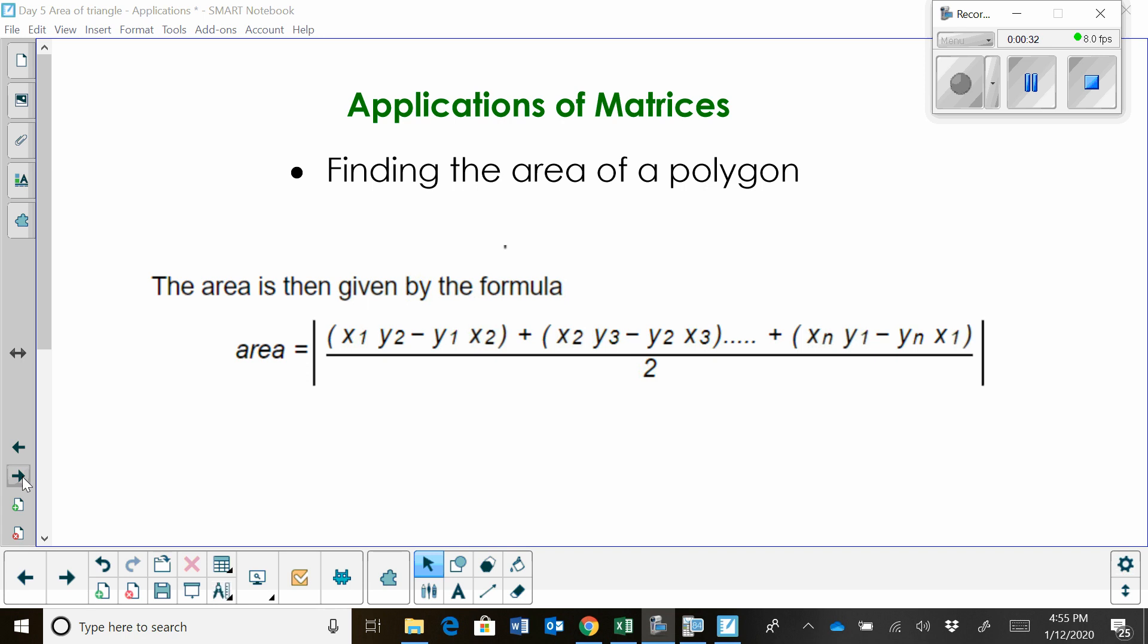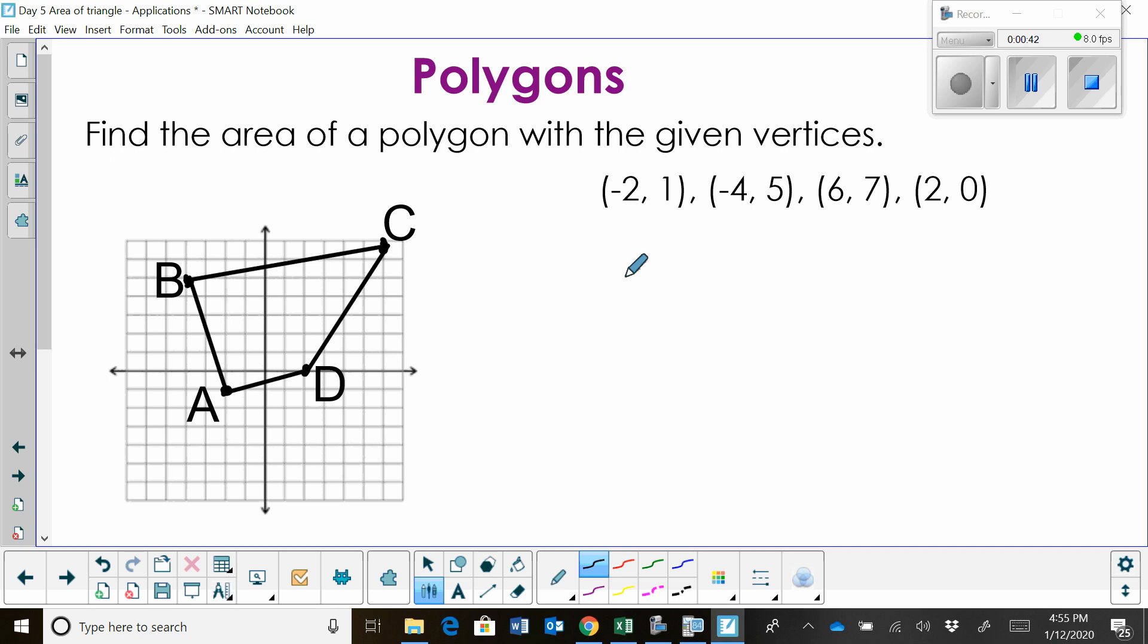But I've got to show you where those little 2x2 determinants come from because these represent a 2x2 determinant. What you're going to do is we're going to start pretty easy. We're going to start with a quadrilateral.